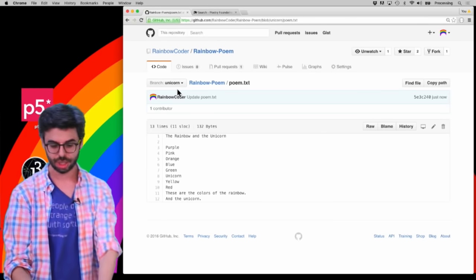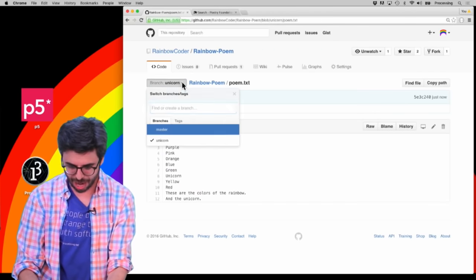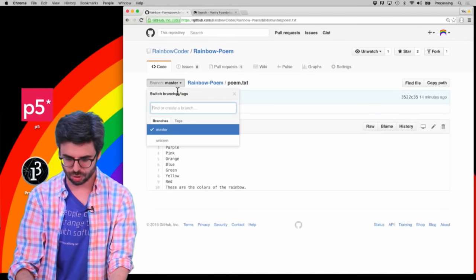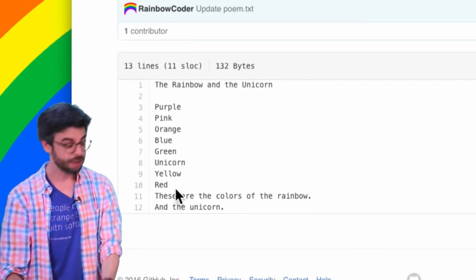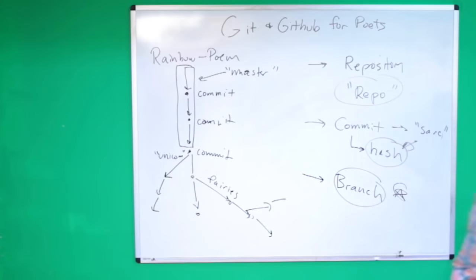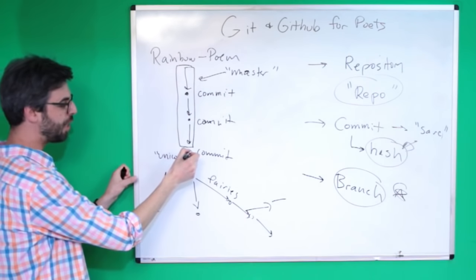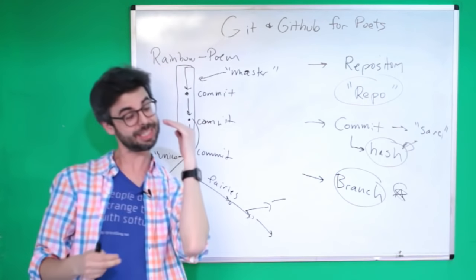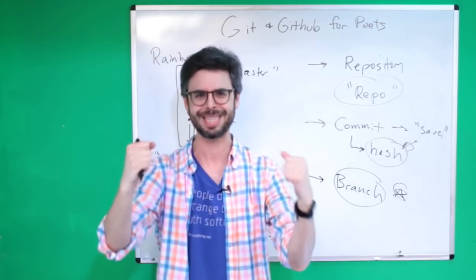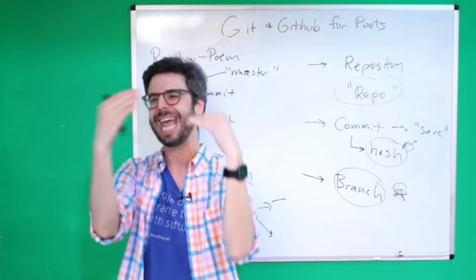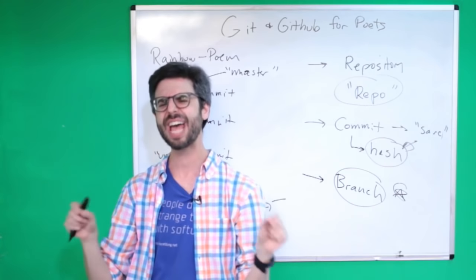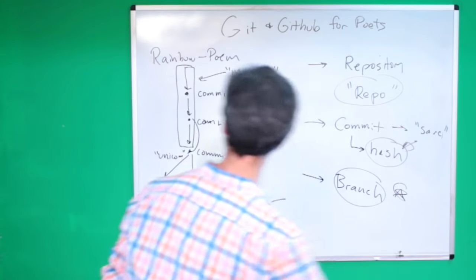Now I've committed to the unicorn branch and have that version of the poem. If I switch back to master, the poem doesn't have the unicorn. Switch back to unicorn and it does. This is somewhat similar to navigating commit history, but branching is a more substantive commitment to the idea of a separate path — when I really want two possibilities going on at the same time.